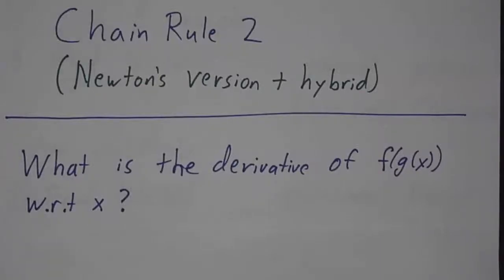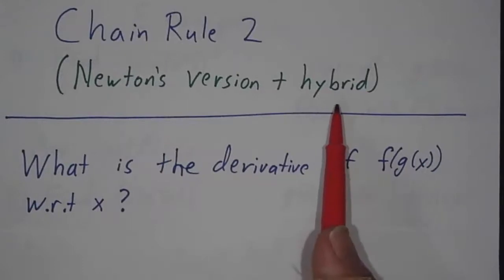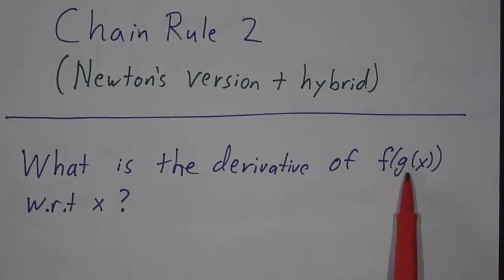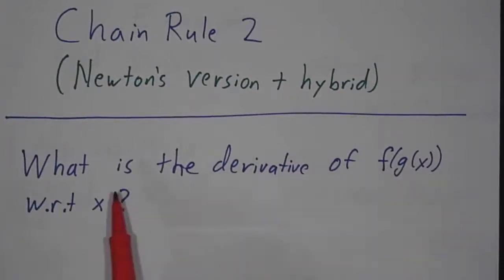In the last video, we went over Leibniz's version of the chain rule. Now we're going to complete our series on how to compute derivatives by looking at Newton's version of the chain rule and the hybrid version. So the basic question is: if you have a compound function f of g of x, what is the derivative of that with respect to x?